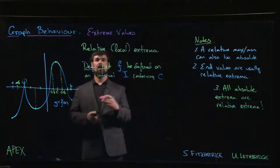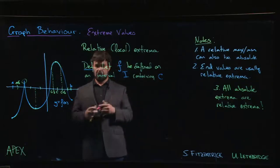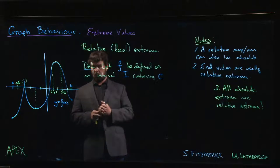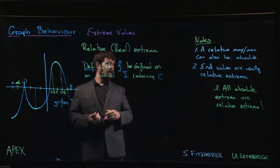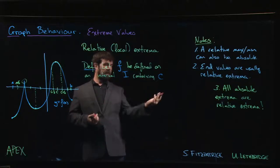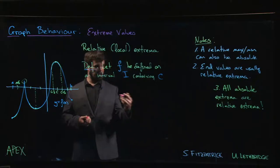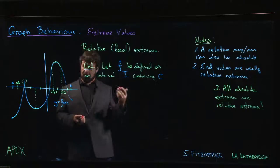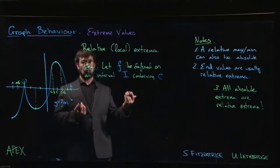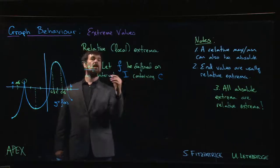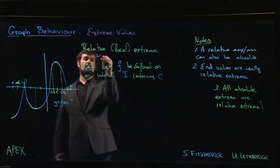In the last video we defined what it means for a function to have a relative max or min value at a point, and we tied that into the problem of finding absolute extrema. We said every absolute extremum is a relative extremum, so if we can find all the relative extrema we just have to order them from smallest to largest and we'll know what the absolute extrema are.